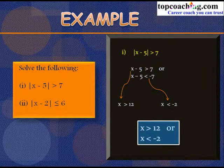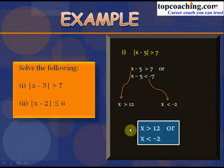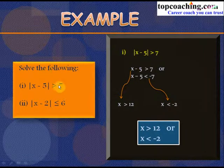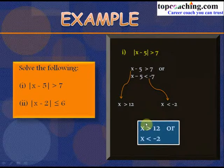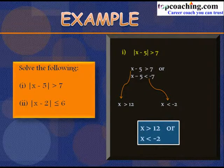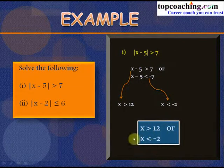Combining both: x > 12 or x < −2. The inequality holds for x less than −2, and also for x greater than 12. For inequalities we get a range of values, not a particular value as in the case of equality. The solution set is x > 12 or x < −2.